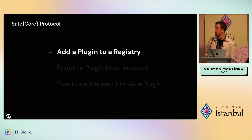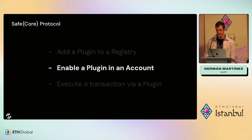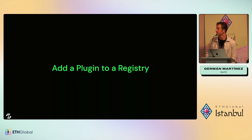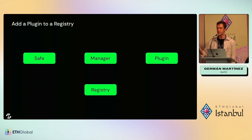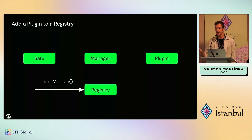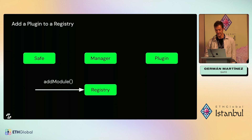So let's focus on plugins: how to add a plugin to a registry, how to enable a plugin in an account, and how to execute a transaction via a plugin. To add a plugin to a registry — as a developer, technically you don't have to do anything. It's something the owner of the registry needs to do, but it will be more bureaucratic as you have to meet the requirements they ask. Then the owner of the registry would call the method `add module` and the module would be added there. Simple, in theory.